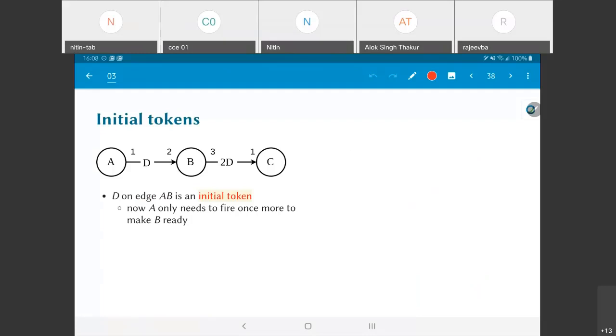There's one more thing we can look at. After all, the channel between A and B is basically a FIFO channel, a first in first out buffer. What does it mean if I draw this symbol D to indicate that there is one token already present on the edge A to B?